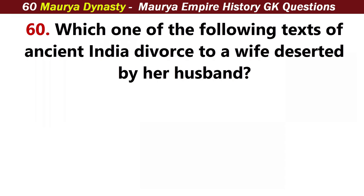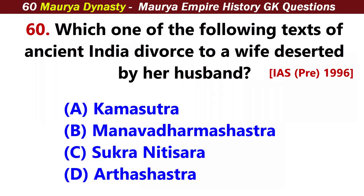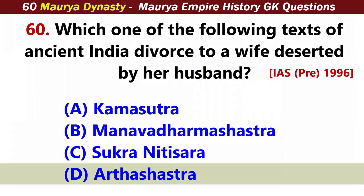Which one of the following texts of ancient India allowed a wife deserted by her husband to remarry? Answer D: Arthashastra.